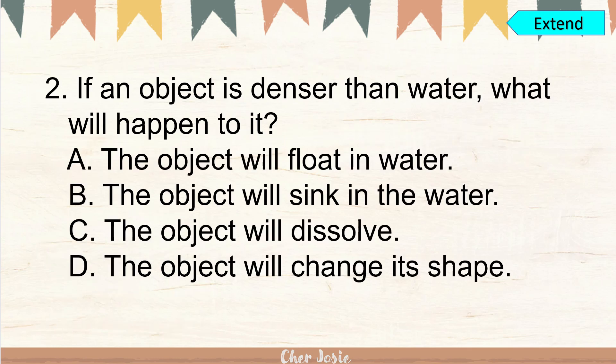Number two: if an object is denser than water, what will happen to it? A. The object will float in water. B. The object will sink in the water. C. The object will dissolve. Or letter D. The object will change its shape. The correct answer is letter B. The object will sink in the water.